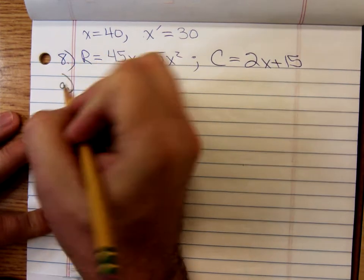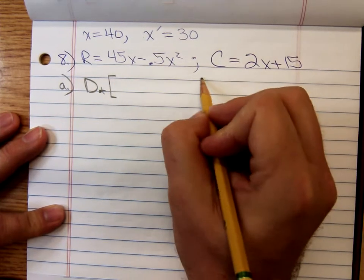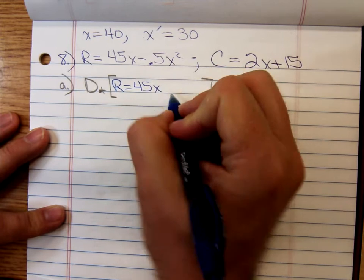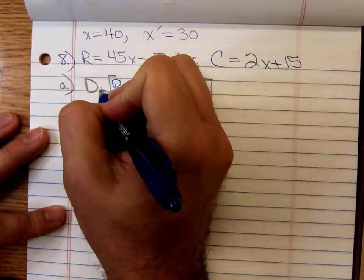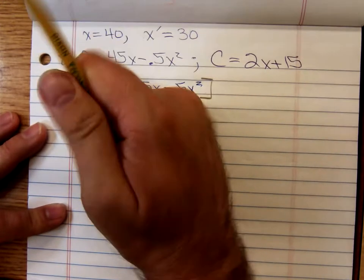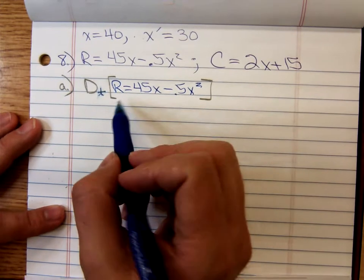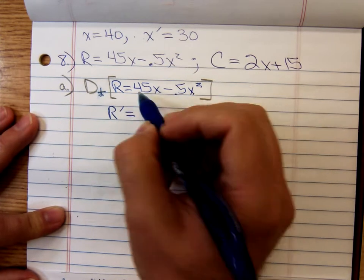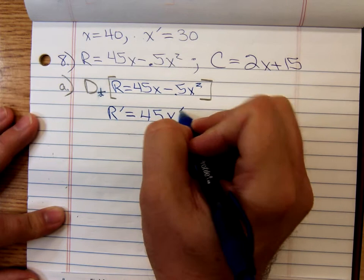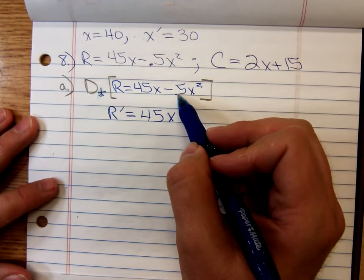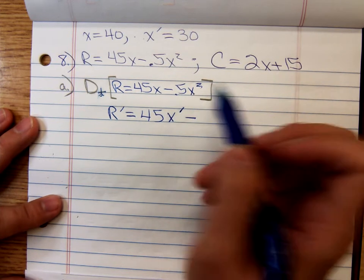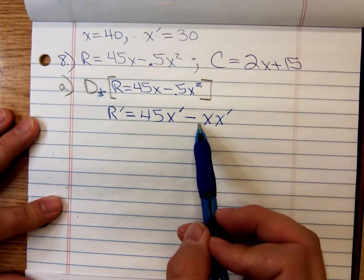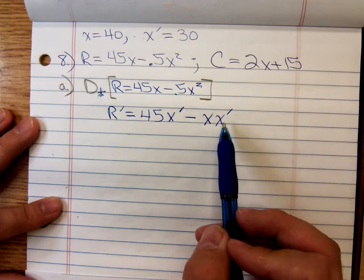First, part A, we're going to be differentiating the revenue function. That's R equals 45X minus 0.5X squared. And realize that's a little T down there. Every time you differentiate a letter that's different from that T, you're going to be picking up a prime, so the derivative of R is just R prime. The derivative of 45X is 45, but we have to stick on X prime minus 2 times 0.5X squared. Stick on the X prime.